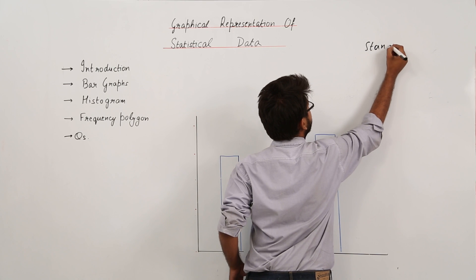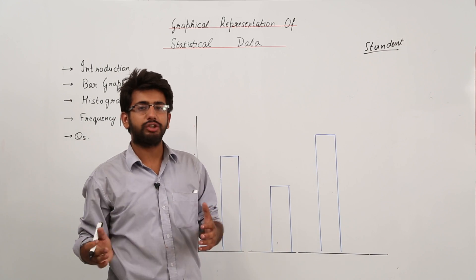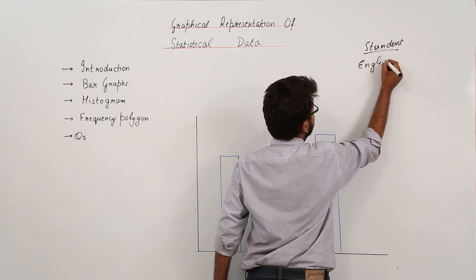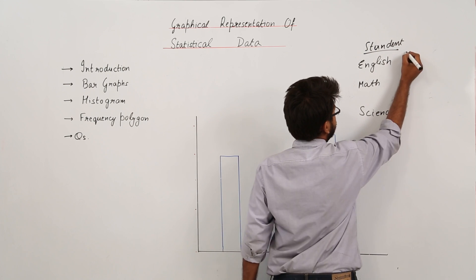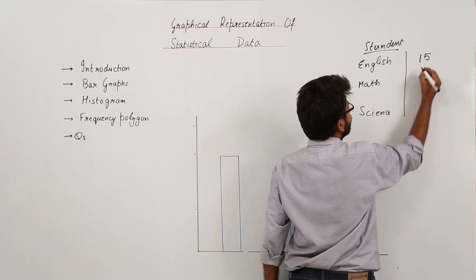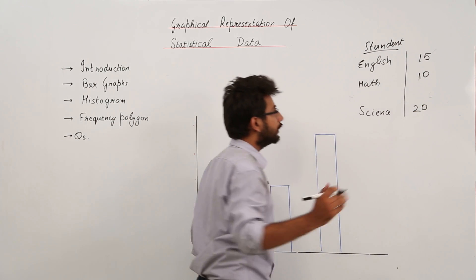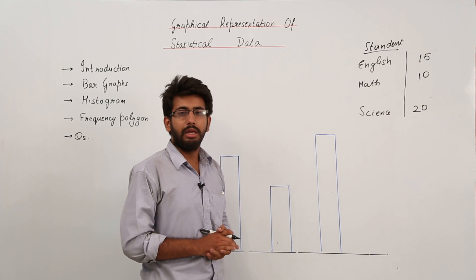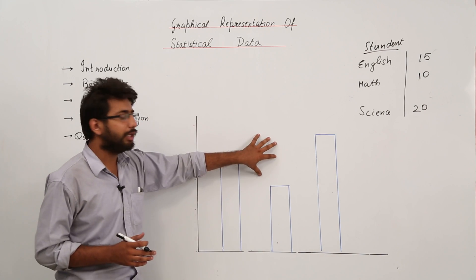Consider a student with marks in three subjects: English, Math, and Science. The student got 15 marks out of 20 in English, 10 marks out of 20 in Math, and 20 marks out of 20 in Science. This is the tabular representation of the data, and now we want to represent it using a bar graph.